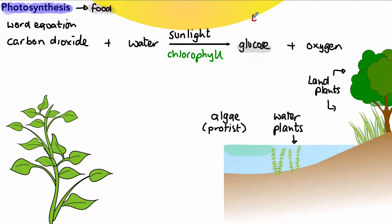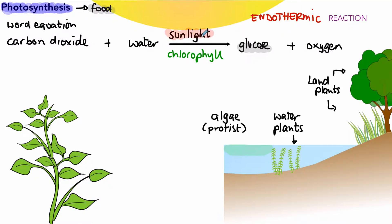It's important to remember that photosynthesis is what we call an endothermic reaction. By endothermic we mean a reaction that takes in energy from the surroundings. The word 'therm' usually relates to heat, but in this case we're talking about sunlight being absorbed from the environment in order for that reaction to proceed.